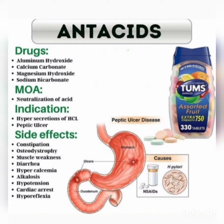The mechanism of action of antacids is neutralization of the acid. When we take an antacid for gastric irritation or pain, it causes neutralization of the acid and we feel comfort. Antacids are used in peptic ulcer disease.